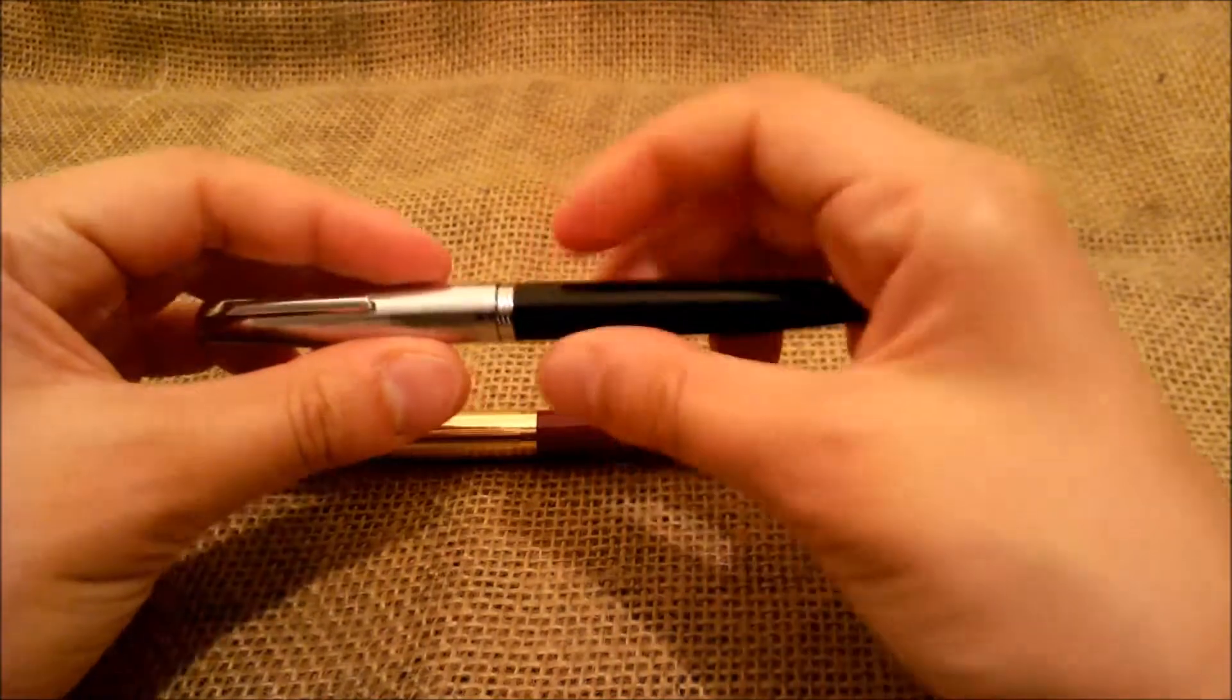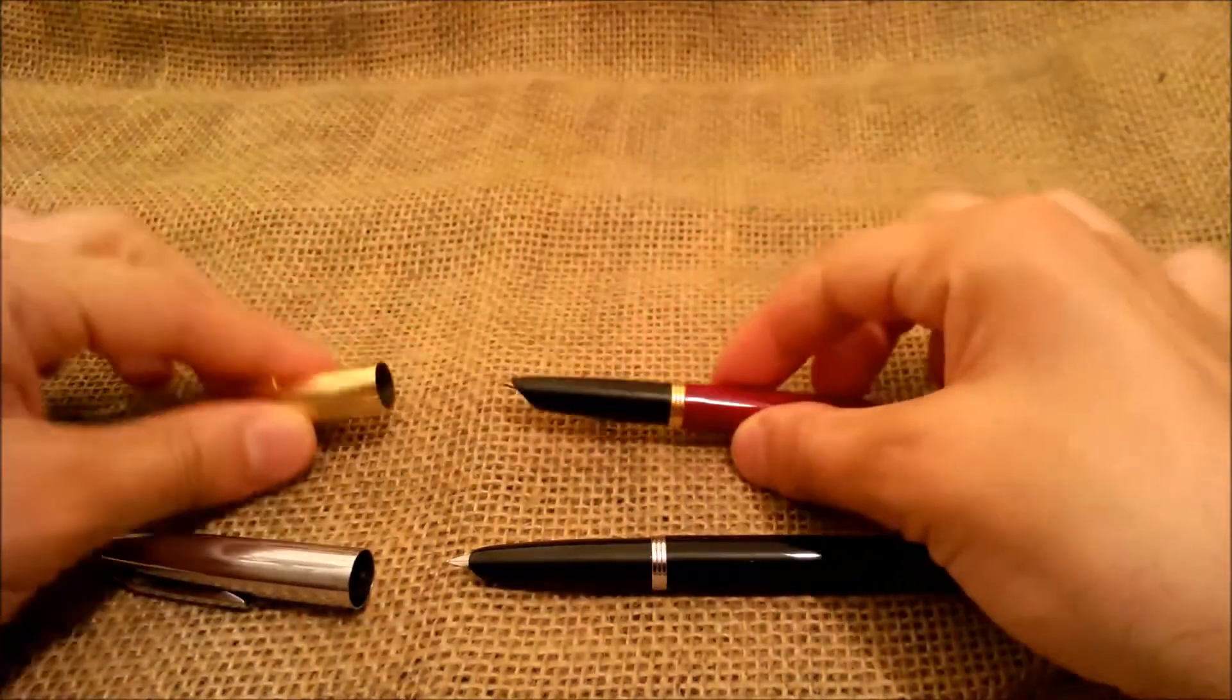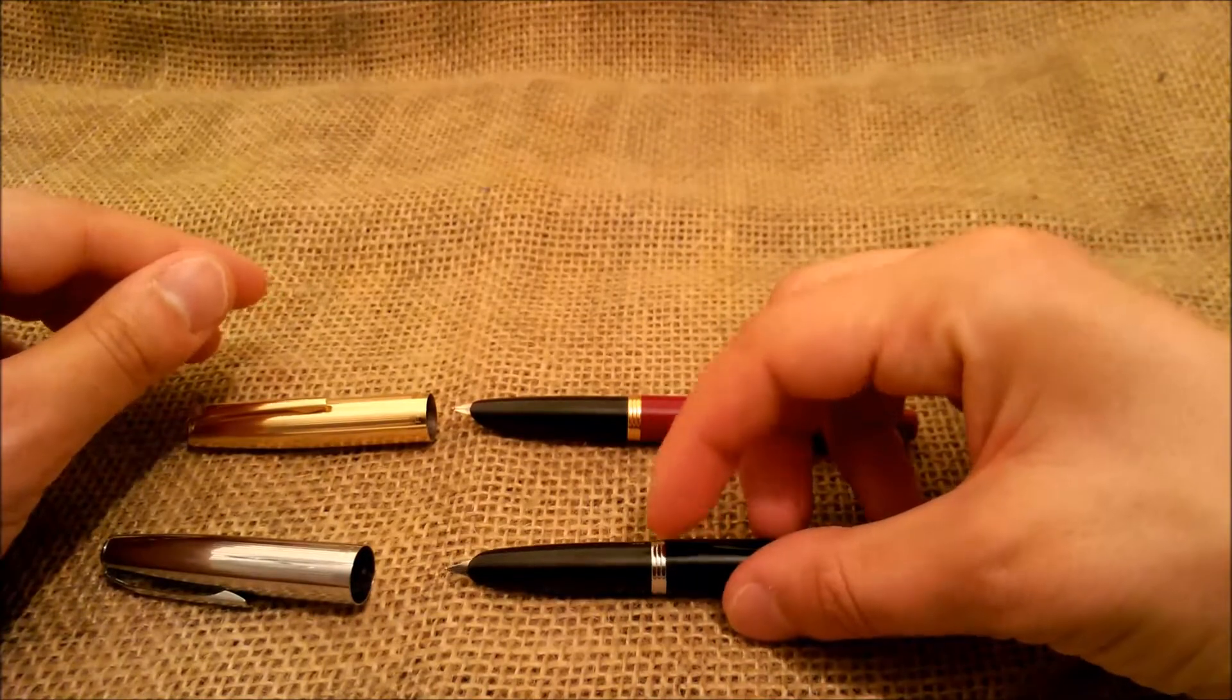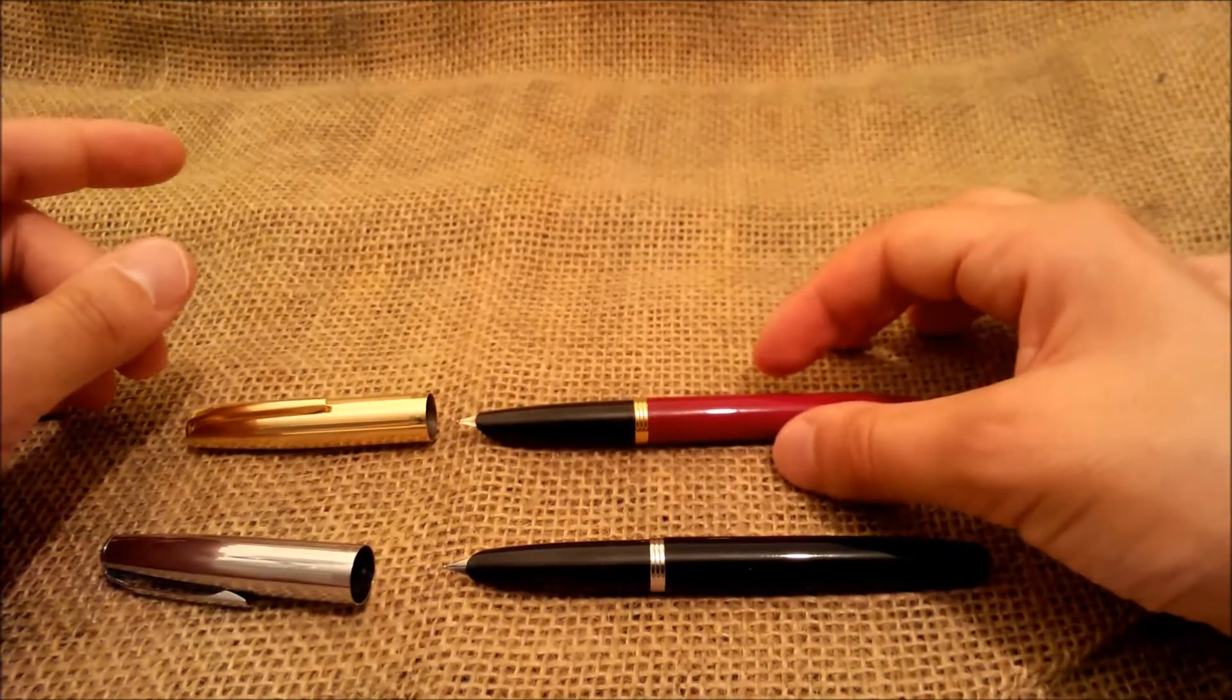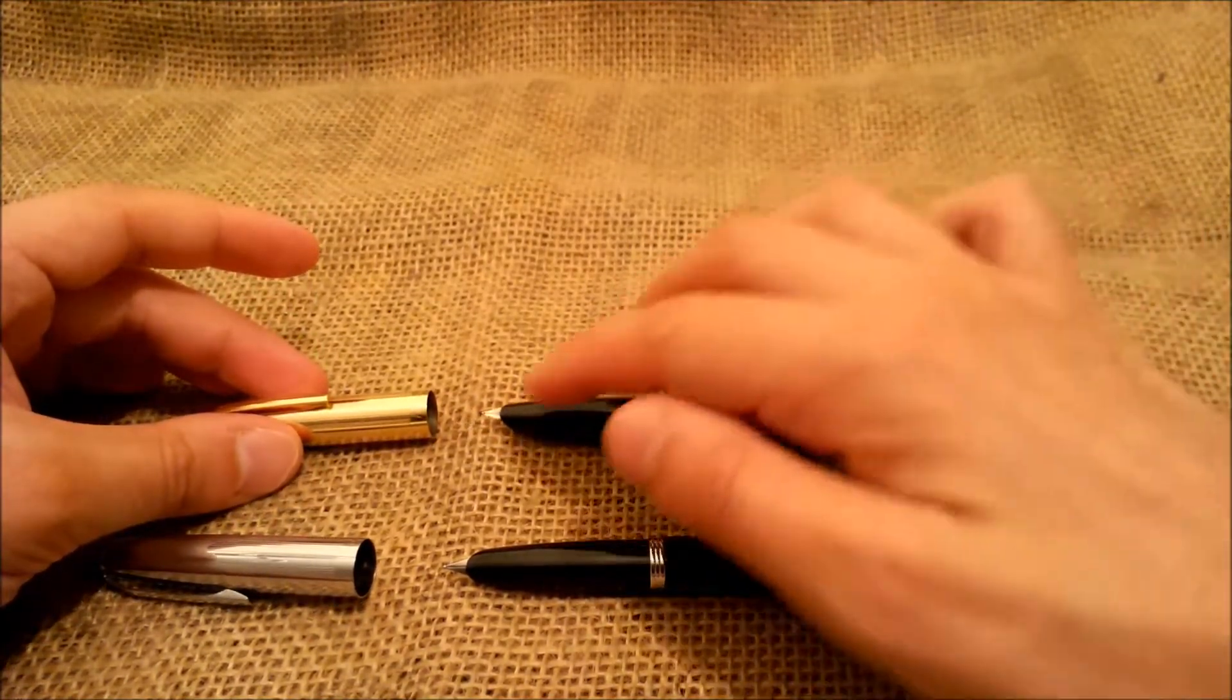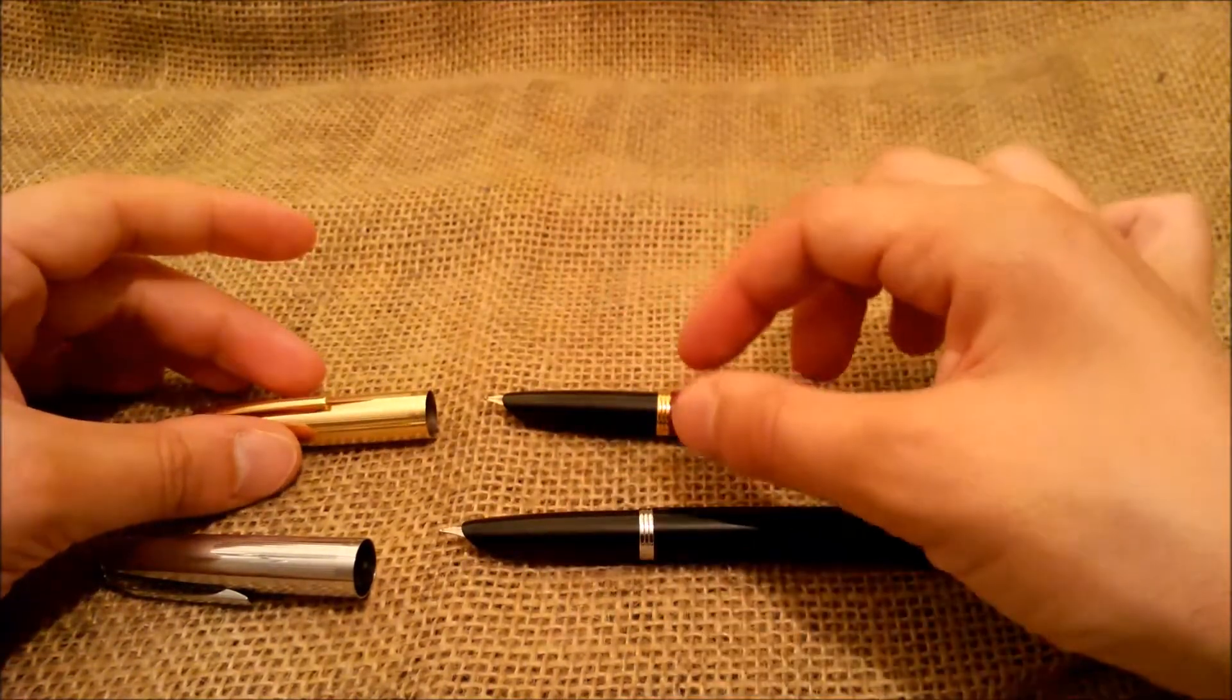When we open this, we obviously see a big difference. First of all, the ring in this one is chrome, this one is gold plated, as it should be to match the colors. Of course, here we have a gold plated nib, here we have a steel nib with a natural color.